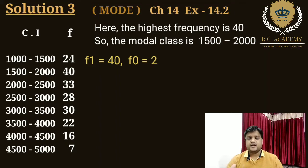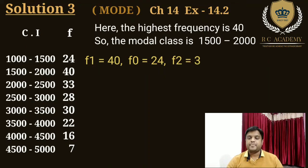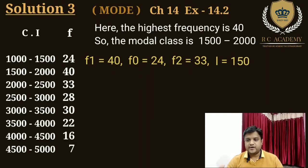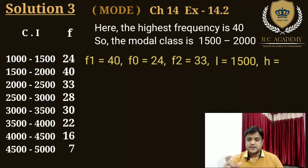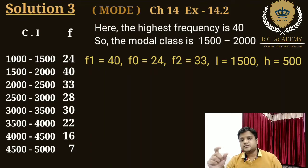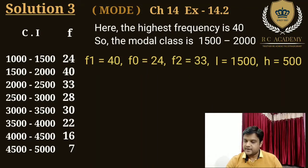F1 ke theek neeche ki frequency ko F2 kaha jaata hai, toh F2 kya hoga? 33. L is the lower limit of the modal class, toh yahan pe L kya hoga? 1500. And H is the width of the modal class — jaise 1500 to 2000 ka width kitna hoga? 500. Toh H kya hoga? 500.